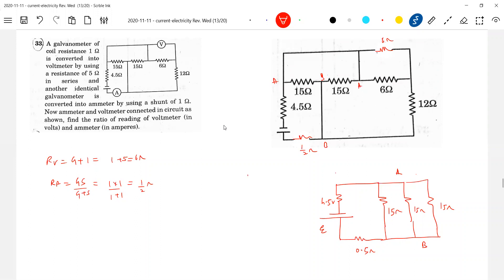A, B, so this is A, this is B. A, B, so this is B. So what is the ratio of reading of voltmeter and ammeter? It's asking the ratio of that one. Okay, let the EMF be.